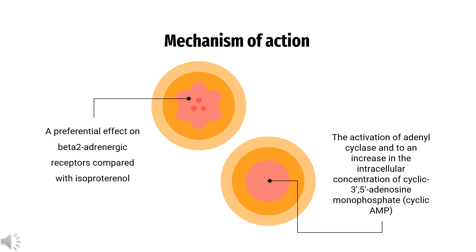Increased cyclic AMP concentrations are also associated with the inhibition of the release of mediators from mast cells in the airways, potentially contributing to its benefit in treating asthma attacks.